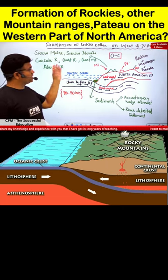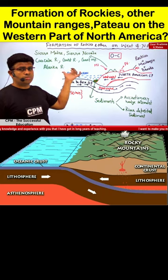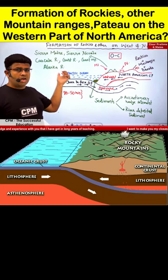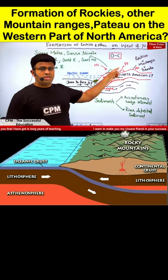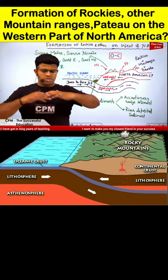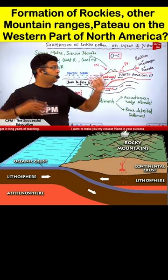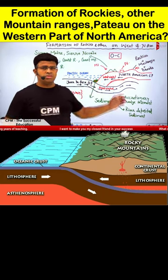Additional fold mountains formed include Sierra Nevada, Cascade, Coast Range, Coast Mountain, and Alaska Range on the western part of North America. In between, some portions were uplifted and became plateau.